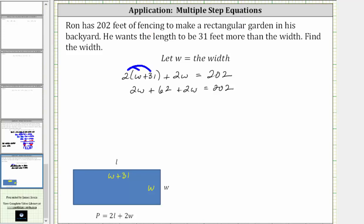Combining like terms on the left, two w plus two w is four w, giving us four w plus 62 is equal to 202.